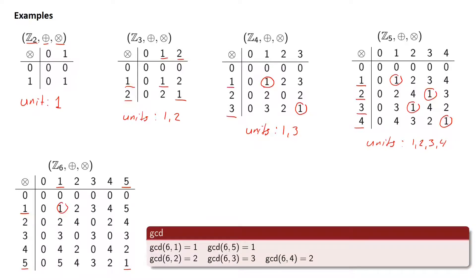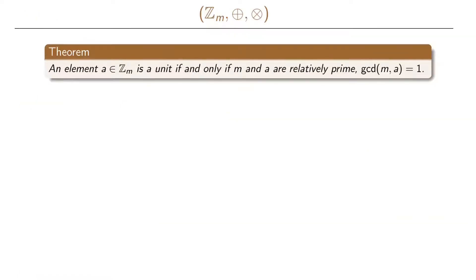Looking at these examples, we start to see a pattern. If the gcd between the number of elements in the set and the specific element is 1, then it is a unit. In Z6: gcd(6,1)=1 so 1 is a unit; gcd(6,5)=1 so 5 is a unit; gcd(6,2)=2 so 2 is not a unit; gcd(6,3)=3 so 3 is not a unit; gcd(6,4)=2 so 4 is not a unit. The theorem states that an element a in Z_m is a unit if and only if m and a are relatively prime, meaning gcd(m,a)=1.